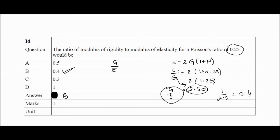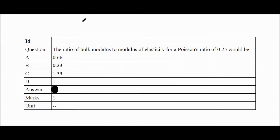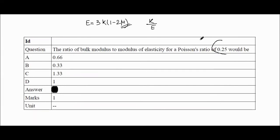The next question is of a very similar pattern. The only difference is the formula to use: E = 3K(1 − 2μ). Here, K/E (bulk modulus ratio) is asked. Just put in the value of μ = 0.25 and you'll get the correct answer, which is A.